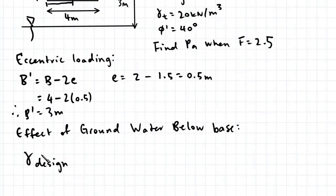So the design unit weight of the soil is equal to the effective unit weight of the soil plus the depth of the water table below the base of the footing divided by the width of the footing multiplied by the unit weight of water.